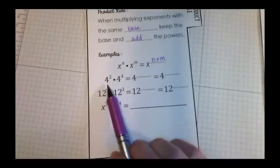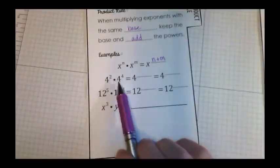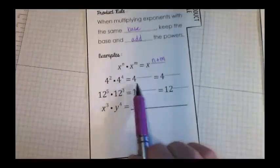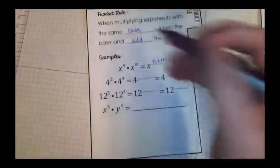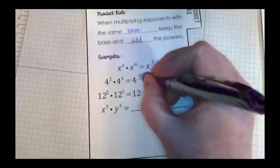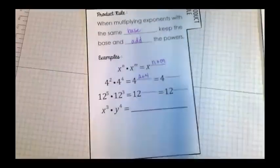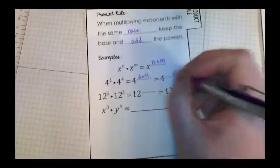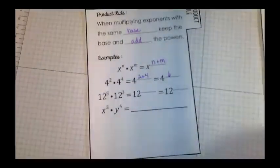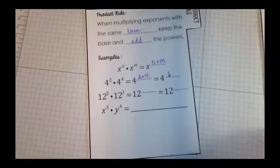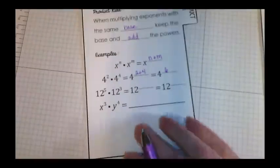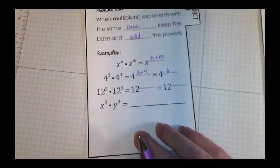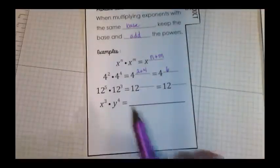So here we're going to do an example with all numbers, four to the second power times four to the fourth power. Let's show the step here. That means we would do four is the base, two plus four are the exponents. That means the answer is four to the sixth power. And we do not need to get a calculator to figure out what that giant number would be. Four to the sixth power is enough. We're just using the exponent rules. We don't have to come up with the numeric value of that.